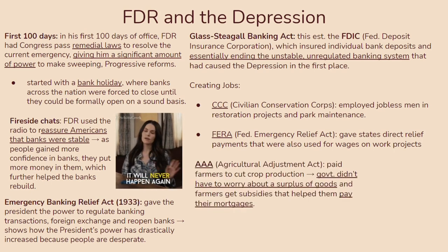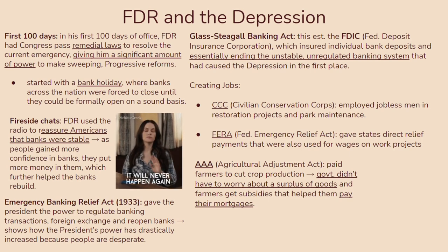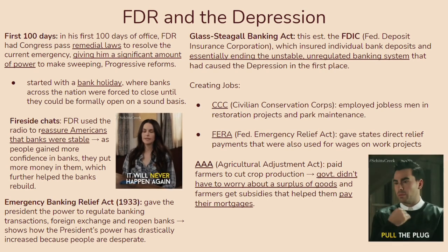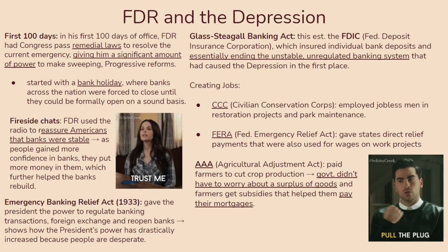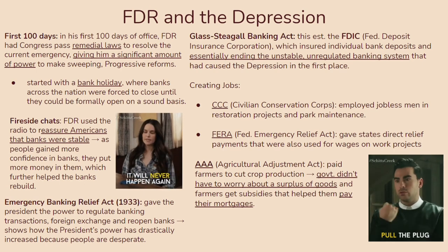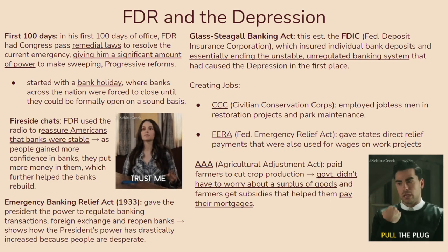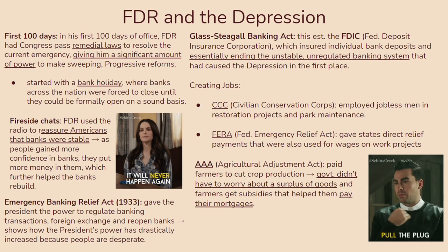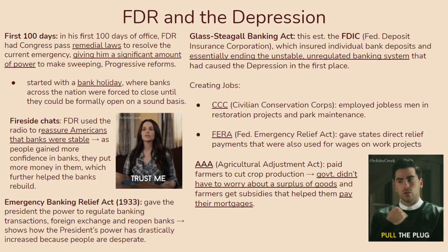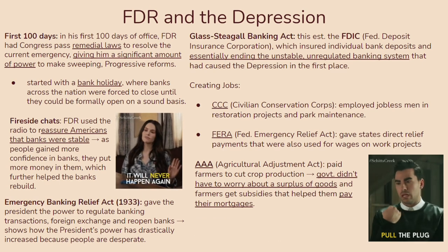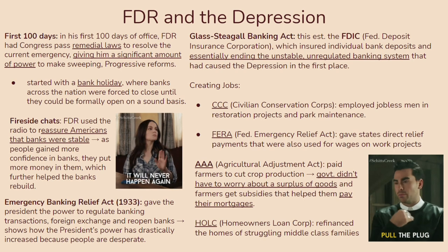You should also know about the AAA — the Agricultural Adjustment Act — which essentially paid farmers to cut crop production so the government wouldn't have to worry about a surplus of goods. It would be more expensive for the government to keep up with a surplus not being met by significant demand, especially since people didn't have a lot of money to spare. These subsidies helped farmers pay off their mortgages, so it was really a nice cycle that sort of worked out for everyone. You should also know about the HOLC — the Homeowners Loan Corps — which refinanced the homes of struggling middle class families.